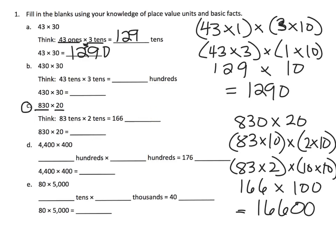We do want to fill in this blank: when you have 83 tens times 2 tens, that's equal to 166 hundreds. So we write in the word 'hundreds' right here.